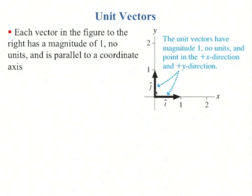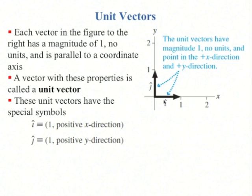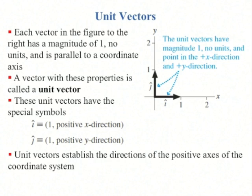Here is a figure with two vectors. They both have a magnitude of 1. Neither of them have any units, they're dimensionless, and they're parallel to the coordinate axes x and y. These are called unit vectors. They have special symbols. This little carat symbol on the top, I call it a hat. So i hat is magnitude of 1 in the positive x direction, and j hat has a magnitude of 1 in the positive y direction. These just establish the directions of the positive axes of the coordinate system. Sometimes people talk about k hat as being in the positive z direction for a three-dimensional coordinate system.